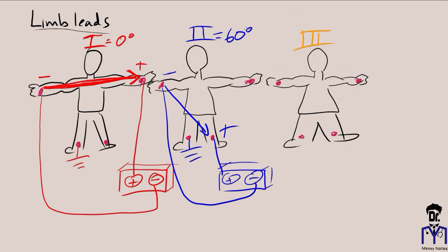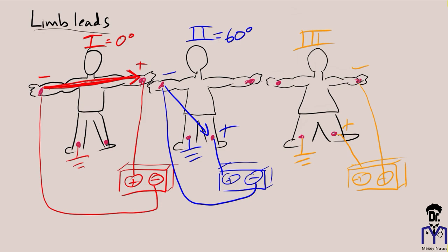Finally, Lead III is created by making the left leg positive and the left arm negative, with the right ankle as ground. Our lead is drawn accordingly, and its angle of orientation will be 120 degrees.